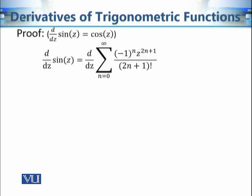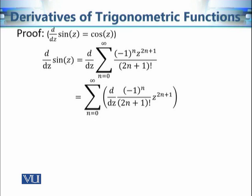In this case, we are going to use the series definition of sine z. This series — we can use the ratio test or the root test to prove that it is convergent for each and every value of z. That's why we can use the result of term-by-term differentiation and calculate the derivative of this series by adding the derivative of each and every term.